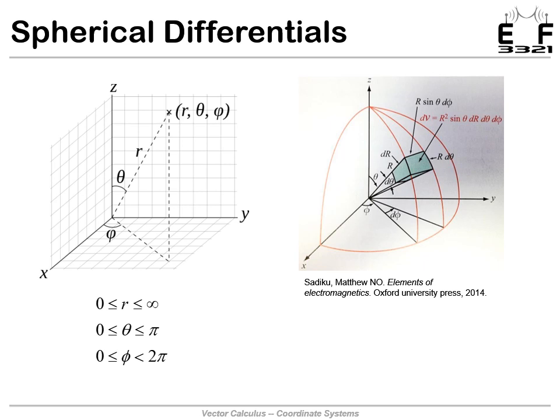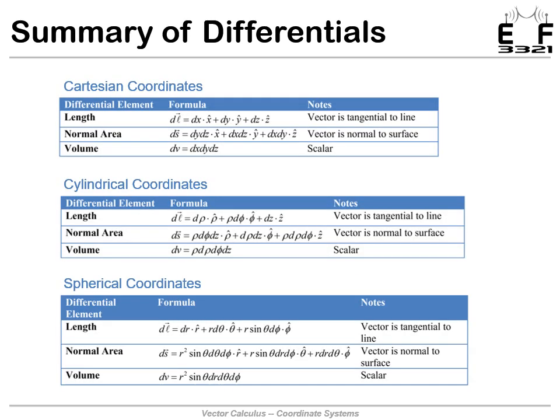Just like the other coordinate systems, we have differential length, differential volume, and differential area for spherical coordinates. Rather than go through all of it again, I've summarized everything in one table on this last slide, covering Cartesian, cylindrical, and spherical coordinates — showing the differential length, the vector differential areas (also called normal area), and the differential volumes all together.